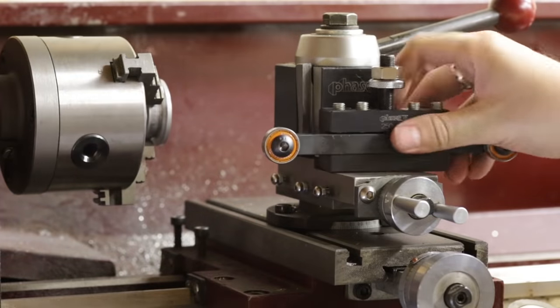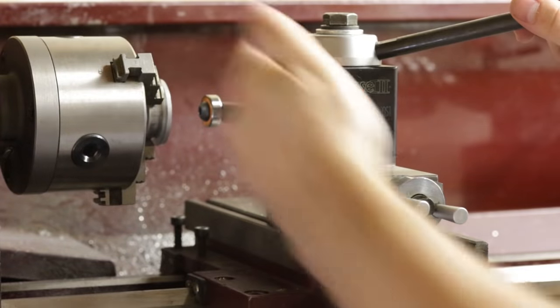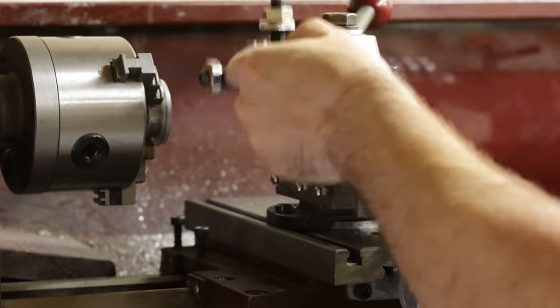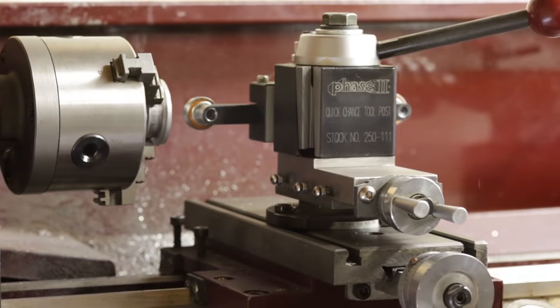Here I've got it mounted in my quick change tool holder and it has the two bearings so you can mount it either on that side like that to go off this surface or you can switch it around to this other side and go like that.